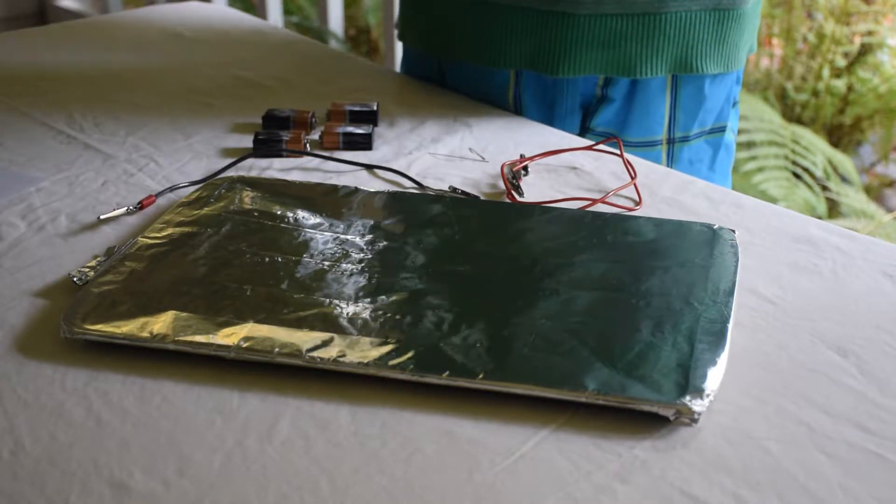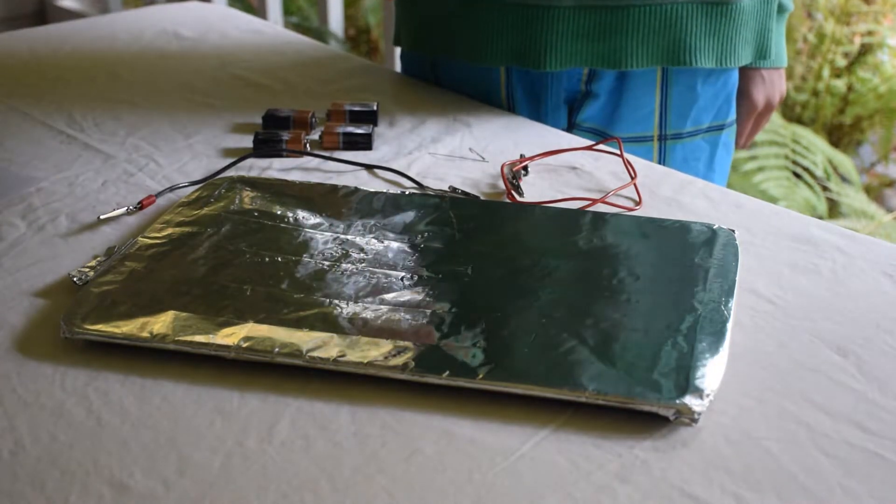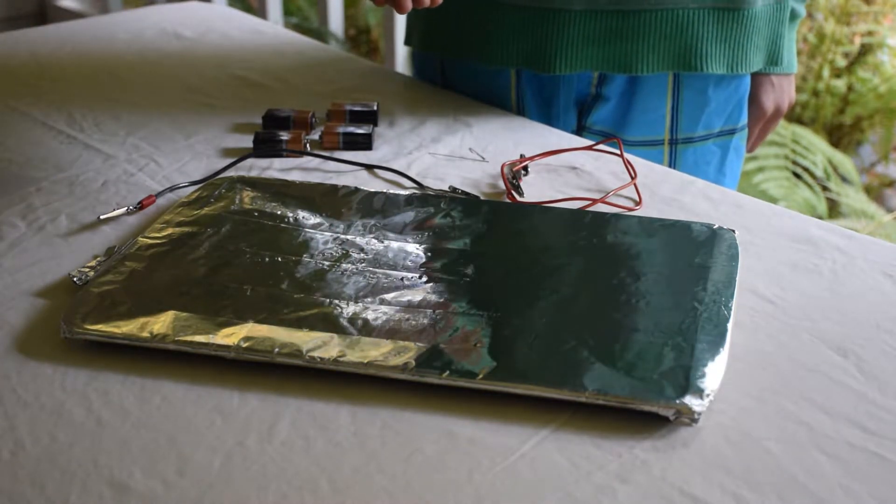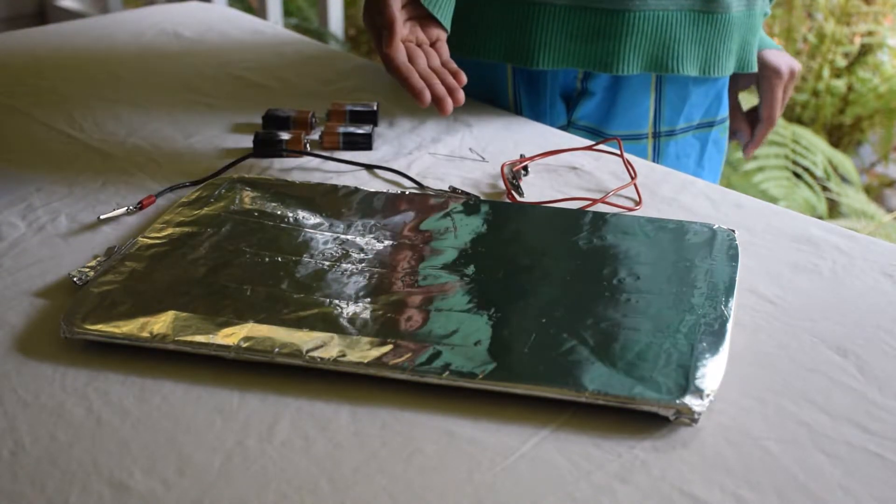What you're going to need for this experiment is four 9-volt batteries, a raised sheet like a cookie sheet or a brownie pan, a graphite lead like that from a mechanical pencil, and two alligator wires.